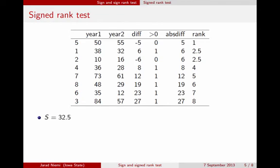So now we calculate our test statistic. Our test statistic here is the sum of the values that have a difference that's greater than 0. So anywhere where this column is a 1, we add the ranks for that row. It turns out that our test statistic here is 32.5.